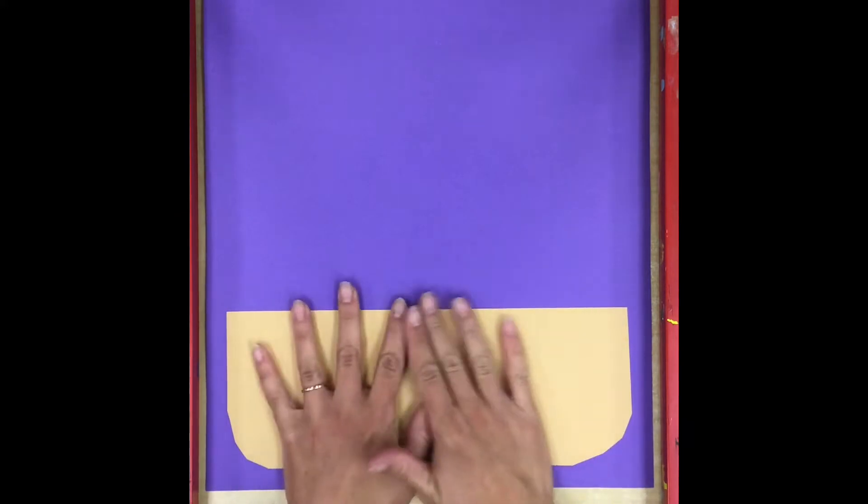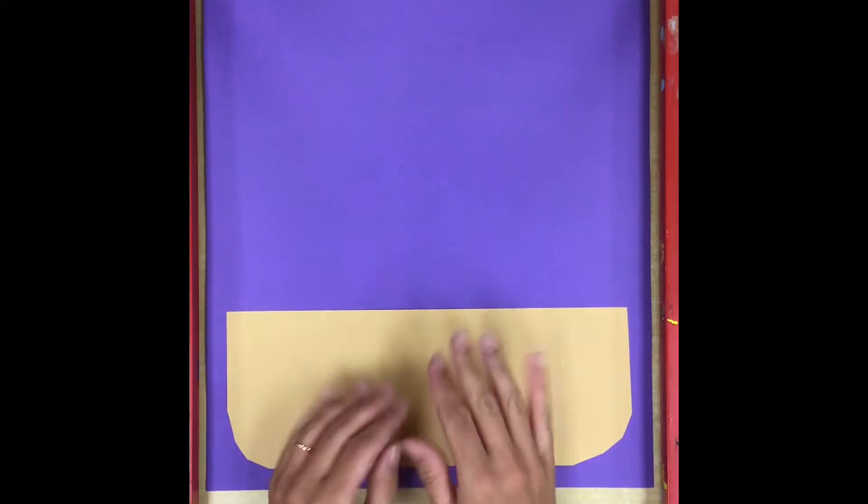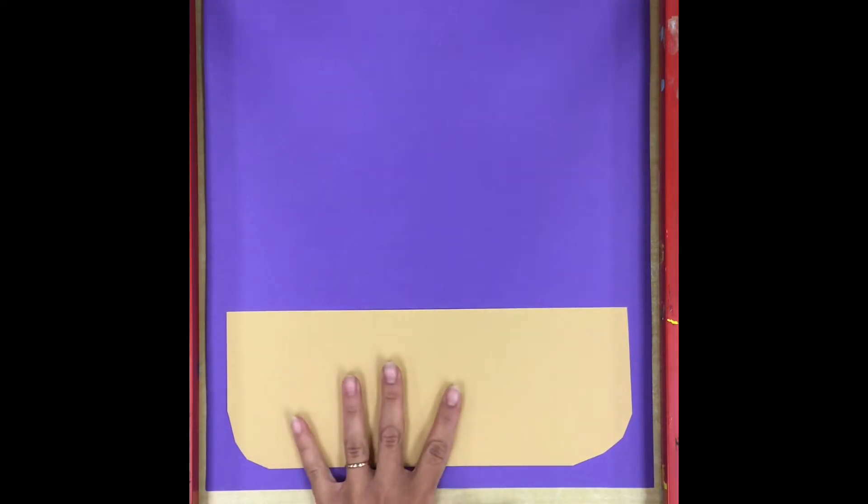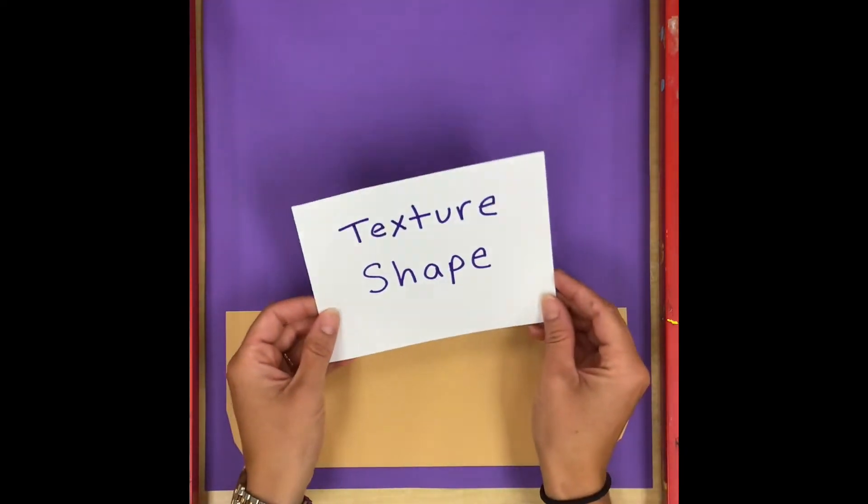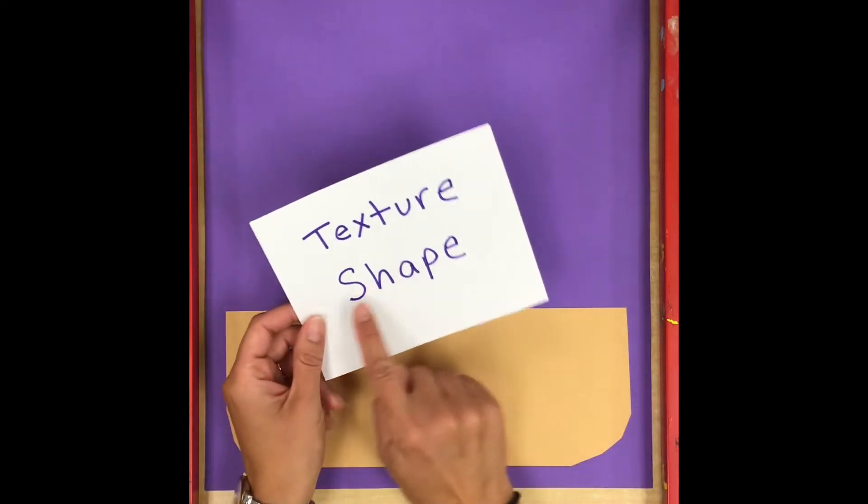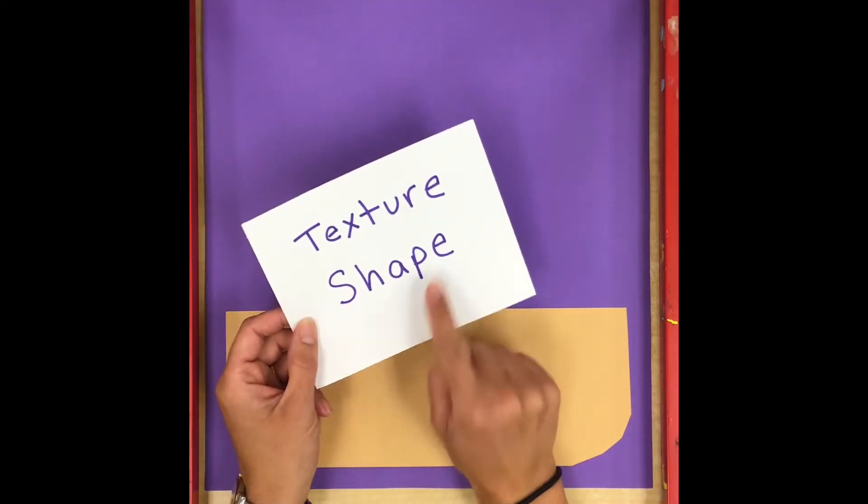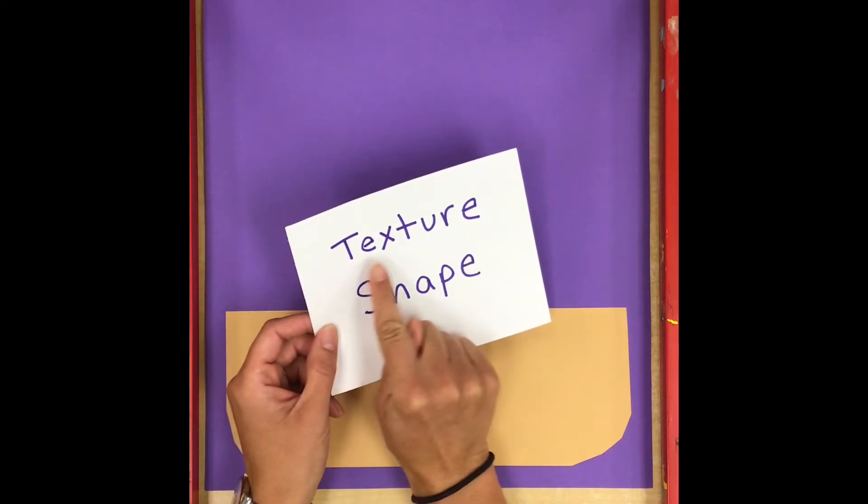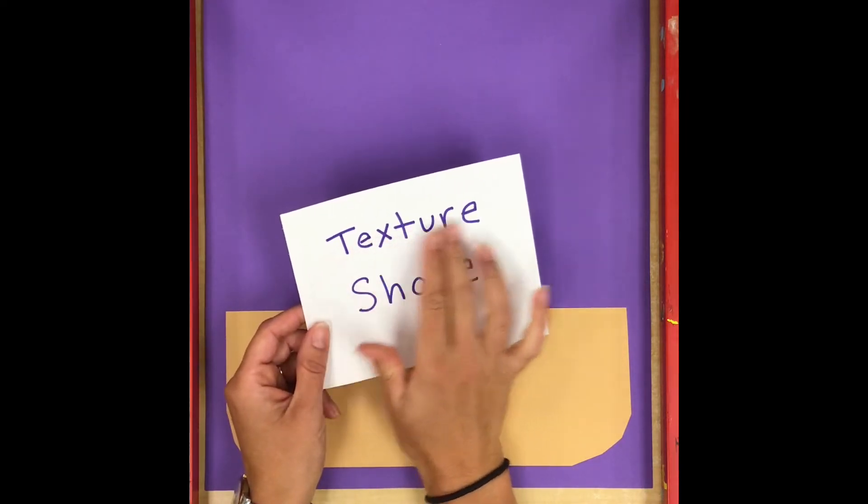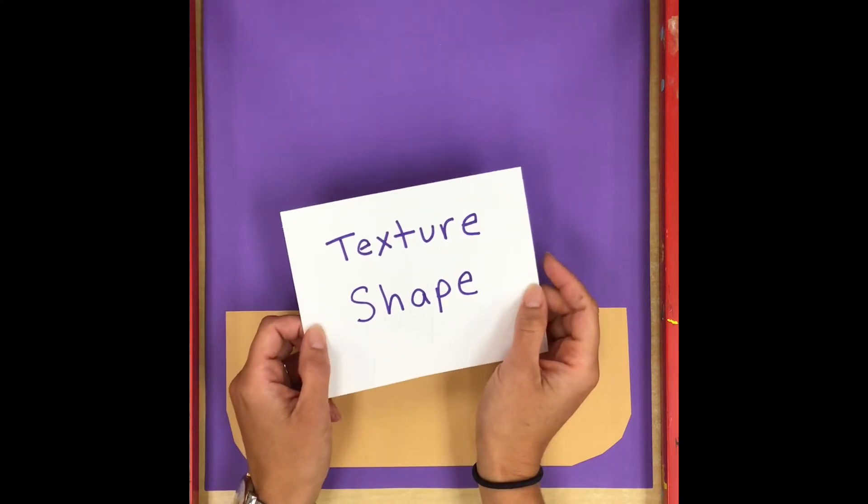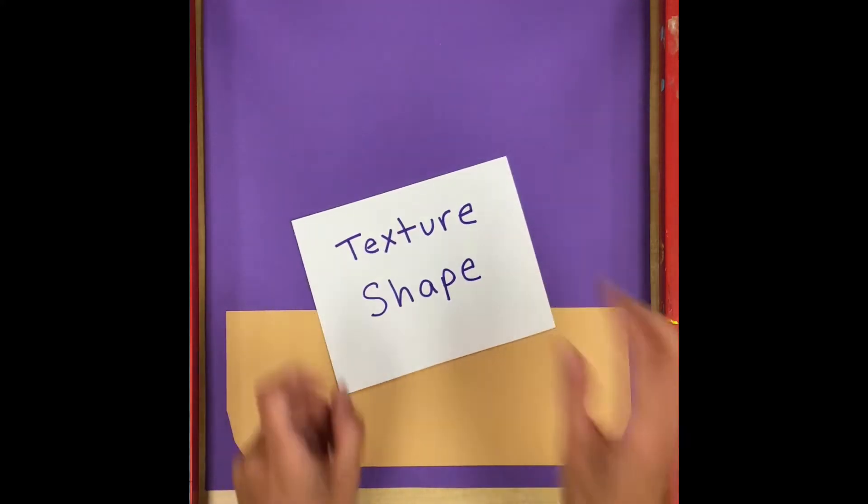All right now for the fun part. I'm going to start creating some toppings for my burger and when I do so I'm going to be thinking about two art elements. I'm going to be thinking about the different shapes of each item I'm cutting out and I'm going to be thinking about how I can use these papers to create different textures. So let's talk about both of those things right now.